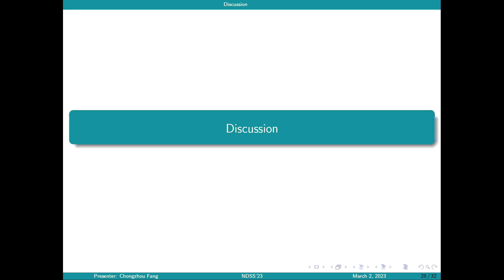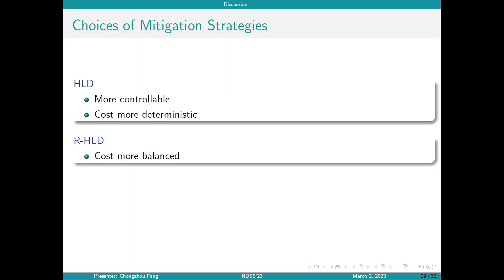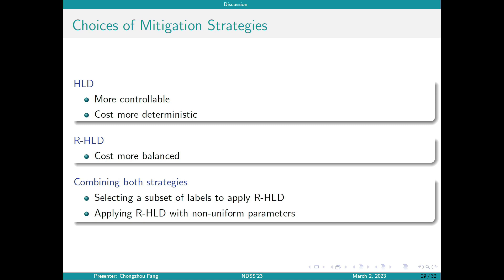Finally, some discussion regarding choices of mitigation strategies. While hiding level defense is more controllable and the costs are more deterministic, randomly hiding level defense can be more balanced. It depends on your trade-off in your operation on the cluster. In practice, the two methods can be combined. For example, cloud providers can choose to only select a subset of labels when applying randomly hiding variable defense. Also, when applying RHLD, the probability parameter does not need to be the same for all labels.